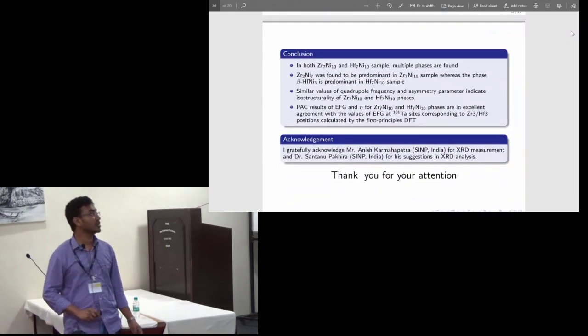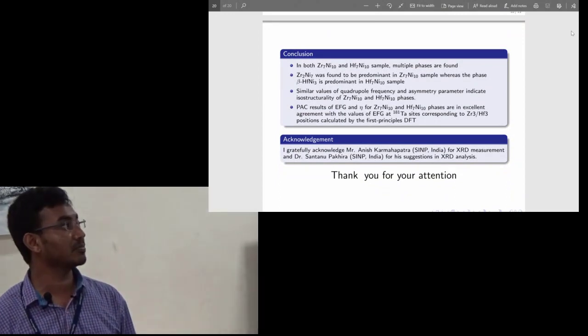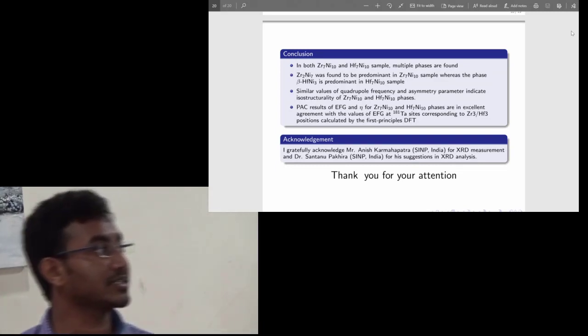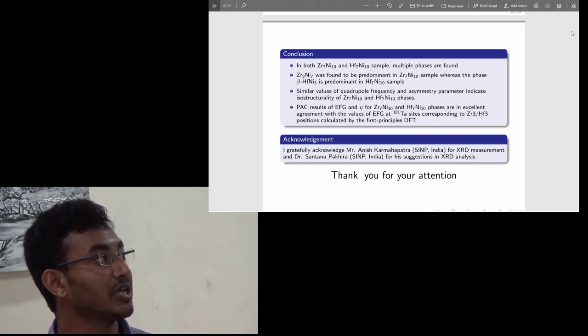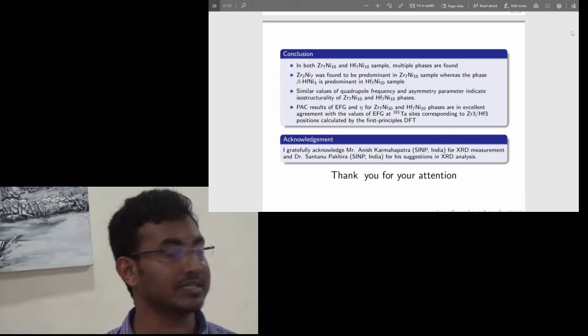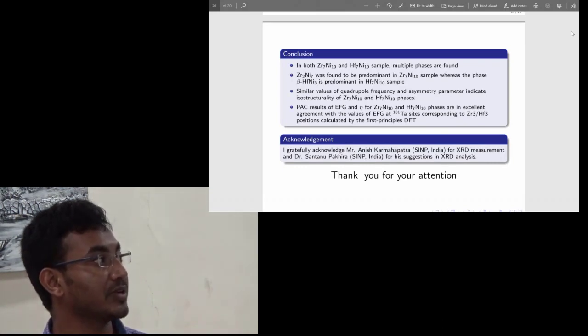Finally, I conclude: in both Zr7Ni10 and Hf7Ni10 we found multiple phases. Zr2Ni7 was found to be predominant in Zr7Ni10 and beta-HfNi3 was found to be dominant in Hf7Ni10. We found similar quadrupole interaction and asymmetry parameter which indicates the isostructurality of these two phases. The PAC results of EFG and eta for both these phases were found to be in close agreement with the EFG calculated from DFT. Thank you for your attention.